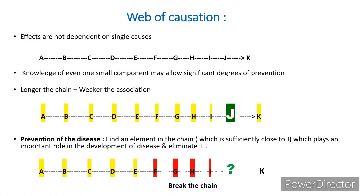Web of causation: generally, effects or outcomes are not dependent on single causes — there are many sub-causal factors. For example, A causes B, B causes C, and so on until the outcome K. Among all causal factors, the one closest to the outcome — factor J — is considered the most important. The longer the chain, the weaker the association. To prevent disease, find an element in the chain sufficiently close to J, such as G, H, or I, which plays an important role in disease development, and eliminate it. Breaking the chain close to J leaves no chance for the disease to occur.